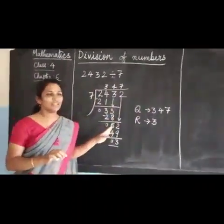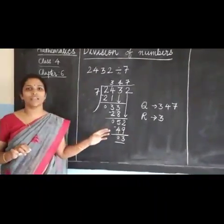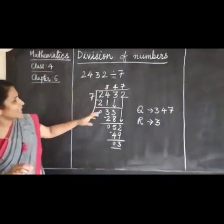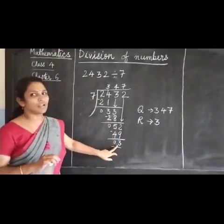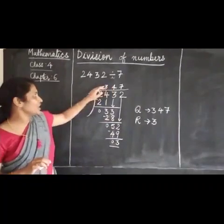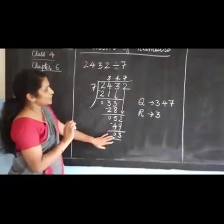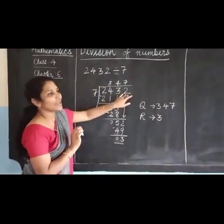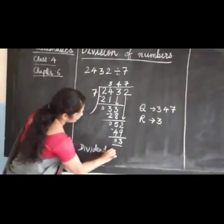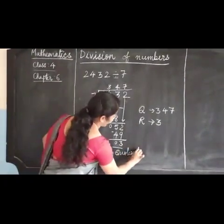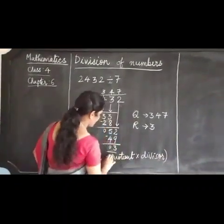We have done our division. Now children, we have also learned the method of checking division. How can we check whether the answer is correct? For checking, we have to multiply the quotient with the divisor and then add the remainder. The formula is: Dividend = Quotient × Divisor + Remainder.